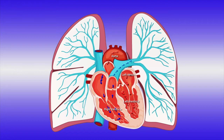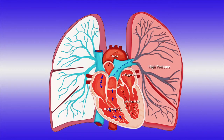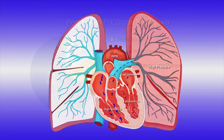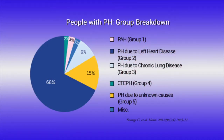While pulmonary hypertension refers to elevated pressures in the lungs, it's important to understand that there are many different forms of pulmonary hypertension. In fact, pulmonary hypertension is grouped clinically into five different groups of pulmonary vascular disease based upon what is thought to be the underlying cause.